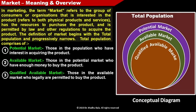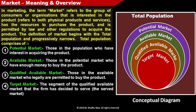Qualified available market refers to those in the available market who are legally permitted to buy the product. Target market is the segment of the qualified available market that the firm has decided to serve — that is called the served market, meaning the segment of the market for which the firm is going to manufacture the product.